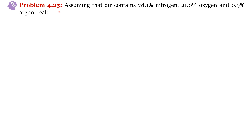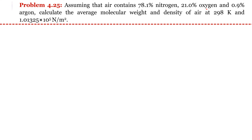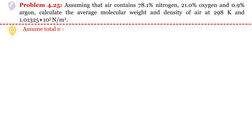Problem 4.25: Assuming air contains 78.1% nitrogen, 21% oxygen, and the rest is argon, estimate the average molecular weight and density of air at a given temperature and pressure. Again to estimate the average molecular weight, we assume total moles of air equals 100. Moles of nitrogen = 78.1, moles of oxygen = 21, and moles of argon = 0.9.